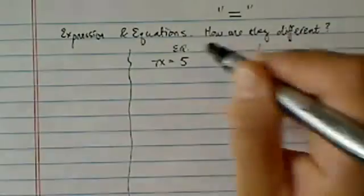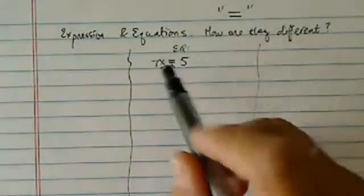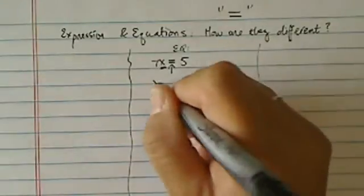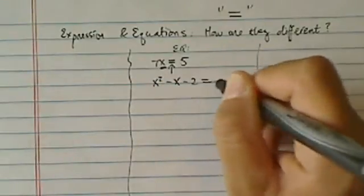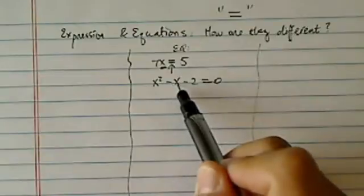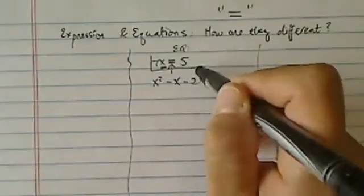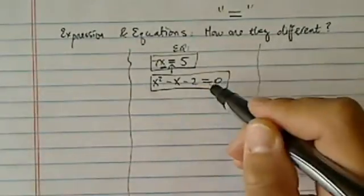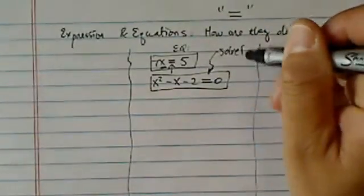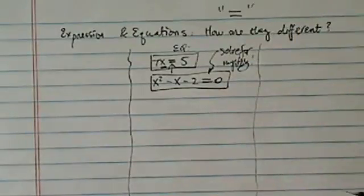Those are called equations. They do have a variable, and this equal sign saying mystery, solve the mystery. If 7 times what mystery number is equal to 5? Or later on, you'll have a quadratic equation. What special x, when you plug it in there, you have x squared, this thing squared, minus itself, minus 2, then you have a 0. So all those set of things have something in common. They all have a variable, and they all have an equal sign. And this equal sign is basically solve for mystery. So they're looking for mystery numbers.